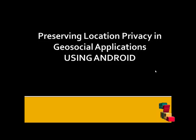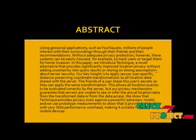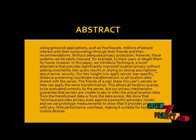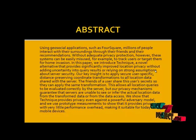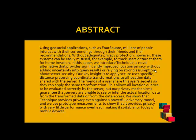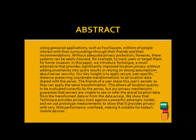Let's see the abstract of our project. Using geosocial applications such as Foursquare, millions of people interact with their surroundings through their friends and their recommendations. Without adequate privacy protection, however, this system can be easily misused — for example, to track users or target them for home invasion. In this paper we introduced a novel technique that provides significantly improved location privacy without adding uncertainty into query results or relying on strong assumptions about server security. Our key insight is to apply secure user-specific distance-preserving coordinate transformation to all location data shared with the server.